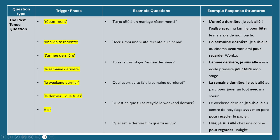Example past tense responses. For 'Tu es allé à un mariage récemment?' (Have you been to a wedding recently?), instead of just repeating 'récemment', choose a more specific time phrase: 'L'année dernière, je suis allée à l'église avec ma famille pour fêter le mariage de mon oncle' — Last year, I went to the church with my family in order to celebrate the wedding of my uncle.